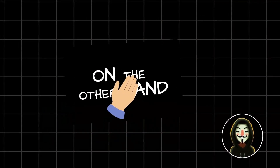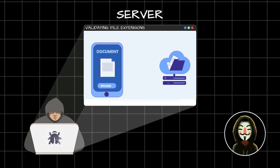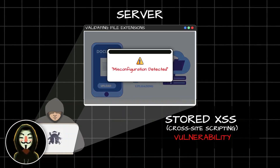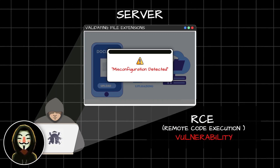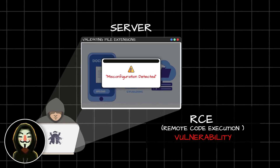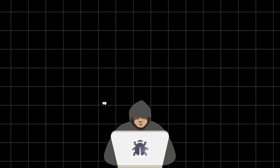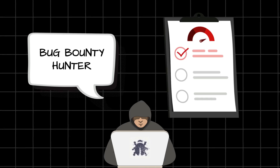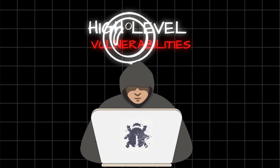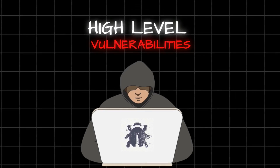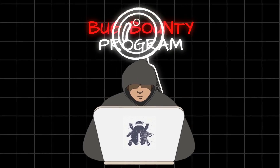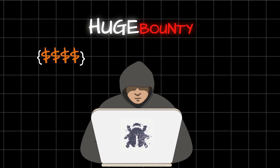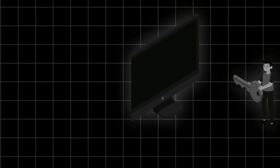If these functionalities are misconfigured, it can allow an attacker to find vulnerabilities like stored XSS and even something known as remote code execution, which can give an attacker full control of the server. If you are a penetration tester or bug bounty hunter, finding file upload vulnerabilities should be a priority — you can find high-level vulnerabilities and increase your chances of getting large bounties.